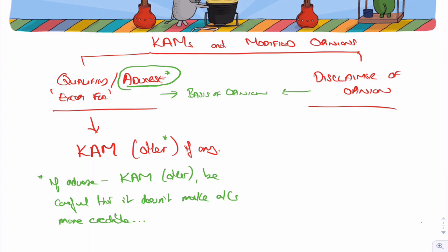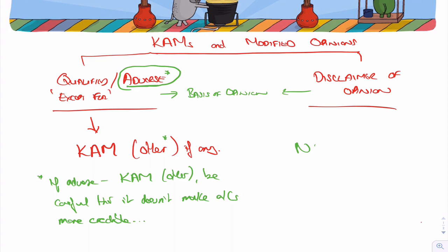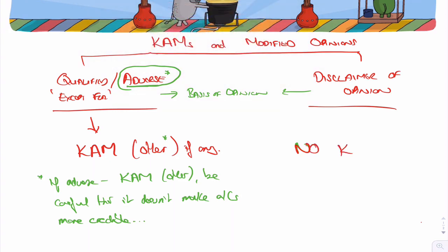If you can't make an opinion up because you don't have enough facts, you've got a disclaimer of opinion, then there will be no key audit matter section.